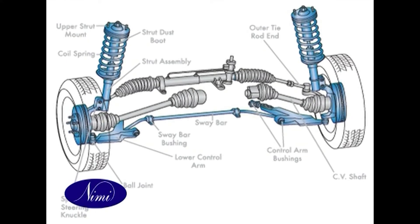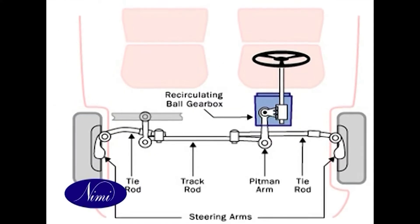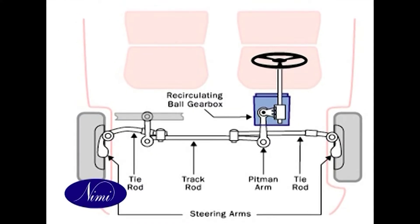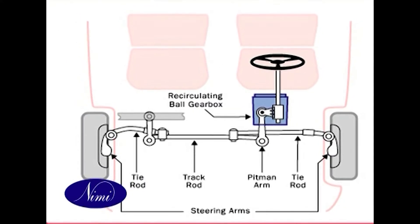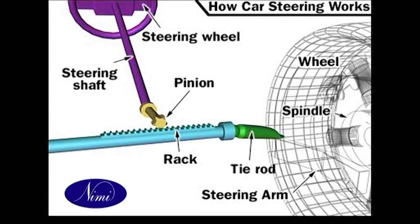The steering system: the type of steering layout depends on the suspension system. The beam axle used on heavy commercial vehicles has a kingpin fitted at each end of the axle, and this pin is the pivot which allows the wheels to be steered.